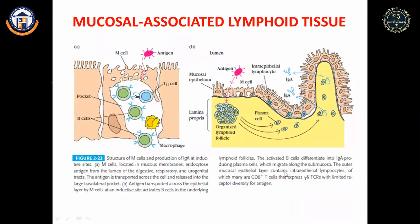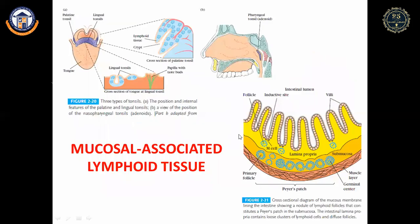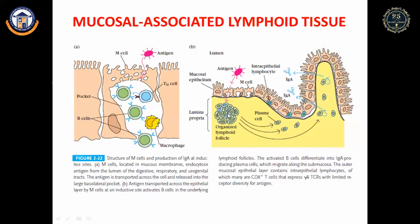The outer mucosal epithelial layer contains intraepithelial lymphocytes (IELs). The lamina propria contains primary lymphoid follicles producing B cells and T cells; B cells create secretory IgA antibodies that encounter and neutralize antigens in the intestinal lumen.